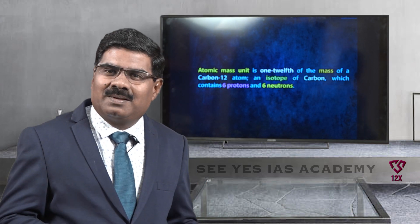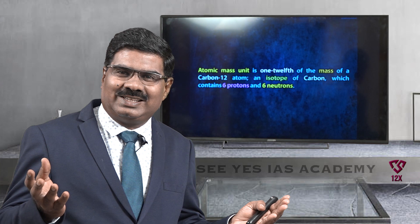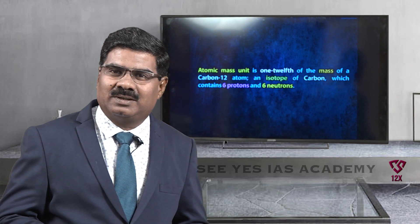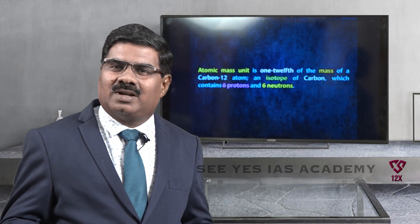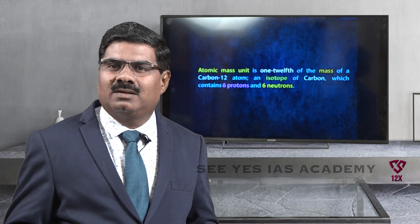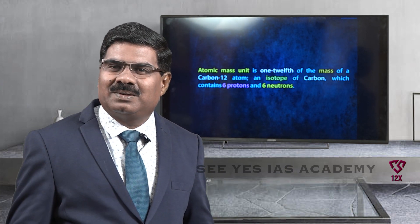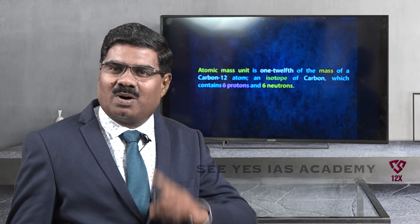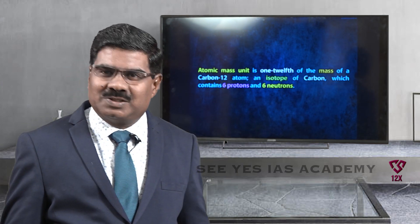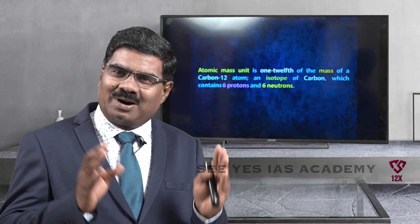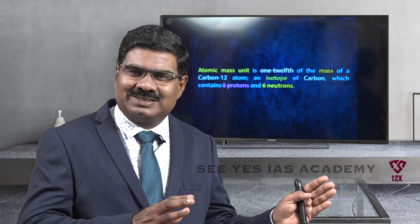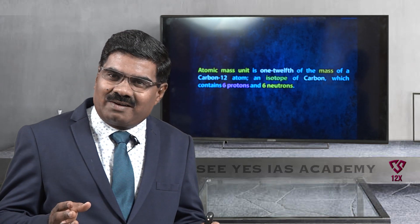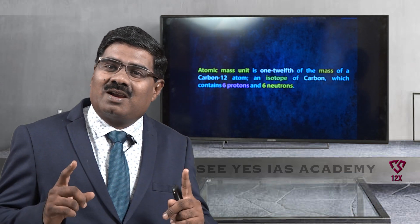Carbon isotope — carbon's atomic number is 6. In the carbon-12 isotope, mass number is 12, atomic number is 6, number of protons is 6, number of electrons is 6, and neutrons = mass number minus atomic number = 12 minus 6 = 6 neutrons. So carbon-12 isotope has 6 protons, 6 neutrons, and 6 electrons.